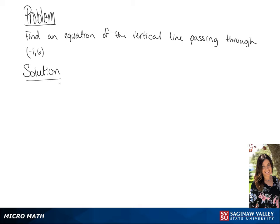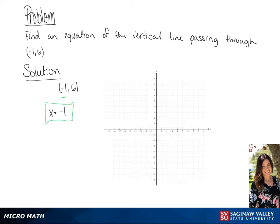We're looking for the vertical line passing through negative 1, 6. Since it's only going to pass through the x-axis and not the y, the equation will be x equals negative 1. We will plot negative 1, 6, and since it's a vertical line, it will only pass through the x-axis, giving us x equals negative 1.